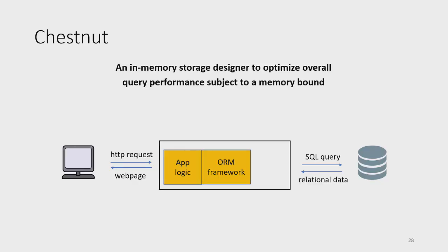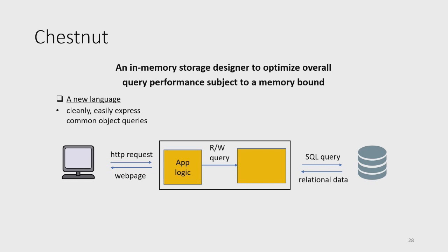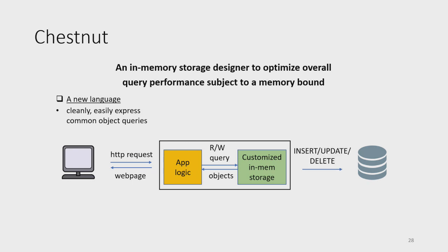To solve this challenge, we built Chestnut, an in-memory storage designer to optimize overall query performance subject to a memory bound. Instead of the low-level inefficient interaction used by today's ORM, Chestnut proposes a new declarative language designed to cleanly and easily express common object queries, where results are directly objects instead of relational data. This language can also be leveraged to customize in-memory storage, and the interaction with the database is more efficient because read queries are answered using in-memory storage while only write queries go to the backend database.